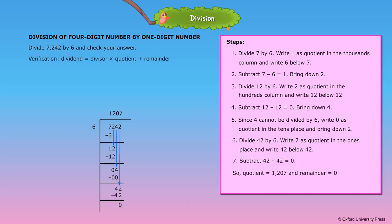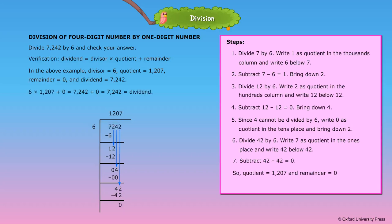Verification: Dividend is equal to divisor into quotient plus remainder. In the above example, divisor is equal to 6, quotient is equal to 1207, remainder is equal to 0, and dividend is equal to 7,242. So 6 into 1207 plus 0 is equal to 7,242. That is the dividend.